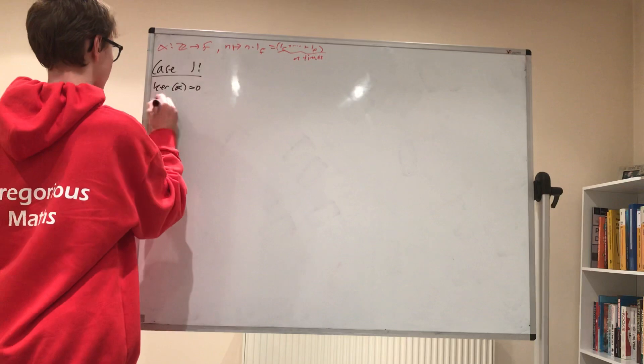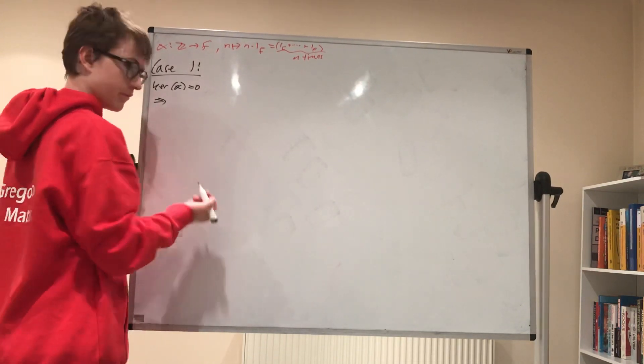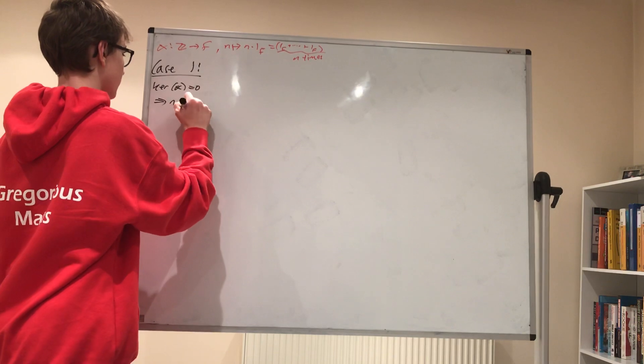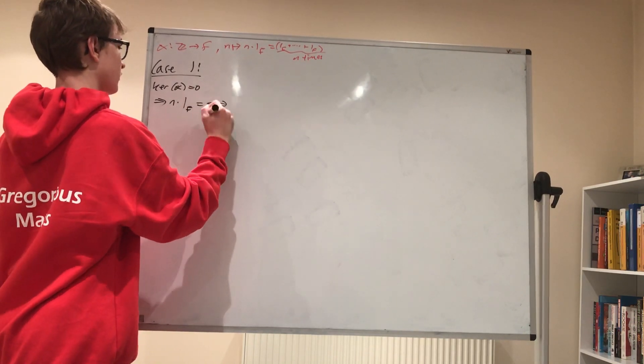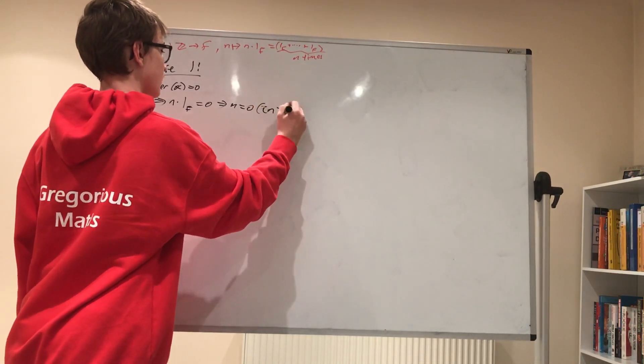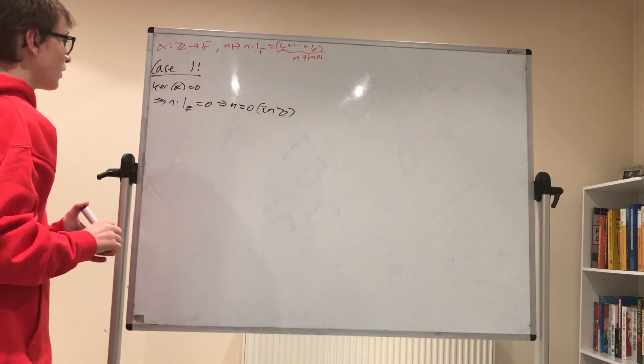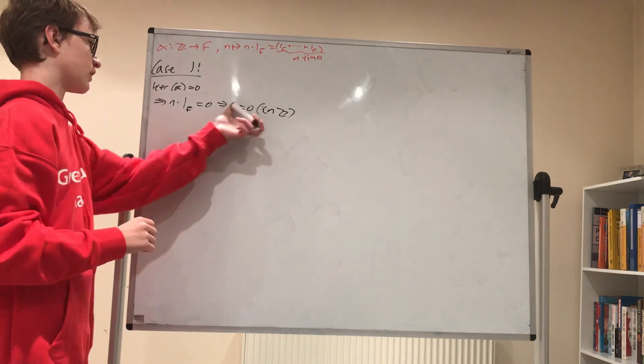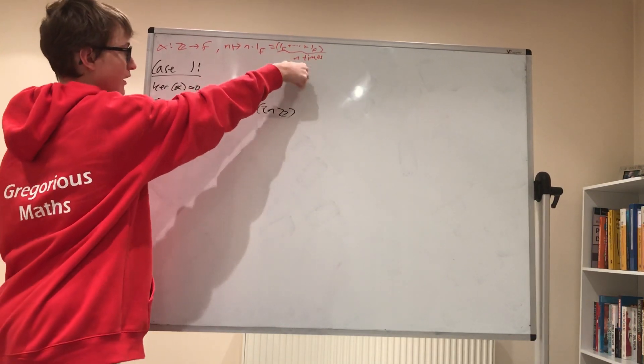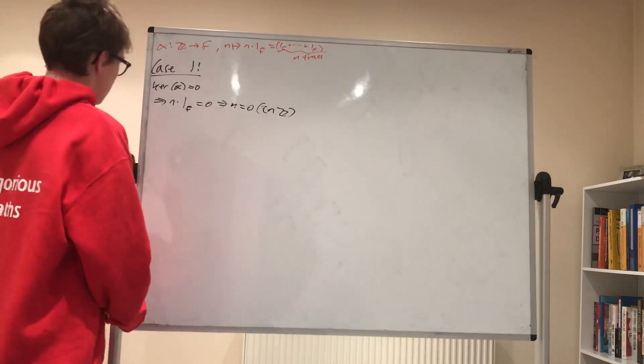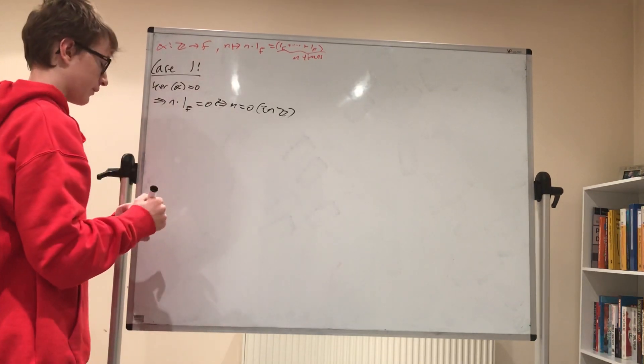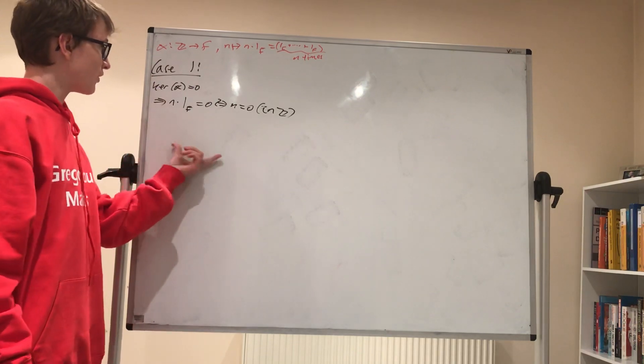So what does this imply? This implies that n times 1f equals zero in the integers. This implies that n times 1f is zero only when you do this zero times. And what happens here? This means that actually, I think you can stick an if and only if sign here.